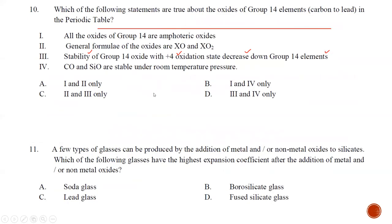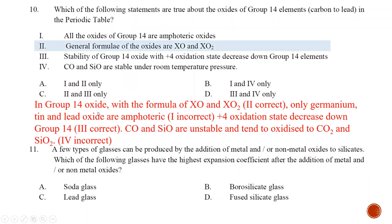Question number ten: which statements are true about the oxides of Group 14 from carbon to lead? Statement A — all Group 14 oxides are amphoteric — is wrong; only germanium, tin, and lead oxides in the plus two and plus four states are. Statement B — general formula of the oxides XO and XO2 — is correct. Statement three — stability of Group 14 oxide with plus four oxidation state decreases down the group — is also true. Statement four — CO and SiO are stable under room temperature — is wrong; CO and SiO are not stable under room temperature, and SiO can disproportionate to Si and SiO2. The best answer is statements two and three only, so the answer is C.